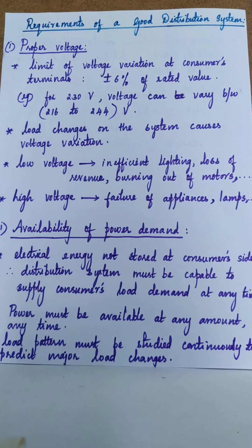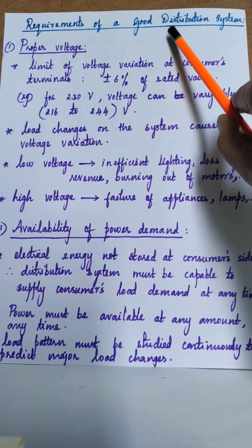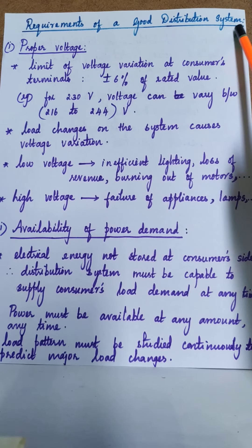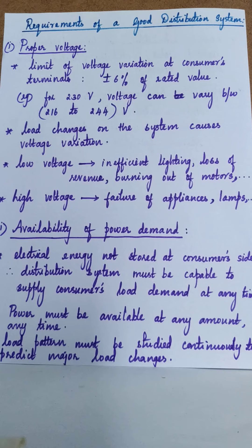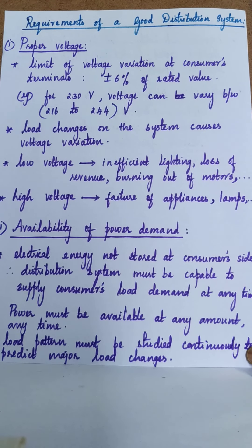Now for one more small topic in the first half of module 5: requirements of a good distribution system. There are three requirements: first, proper voltage; second, availability of power demand; and third, service reliability.